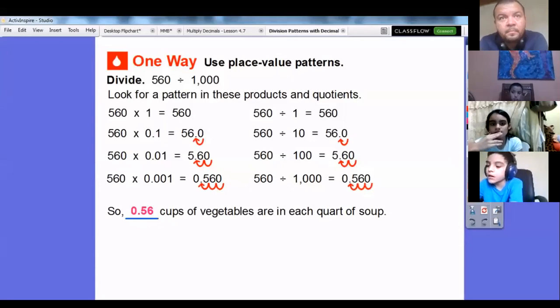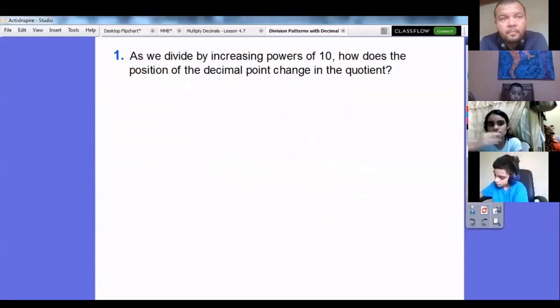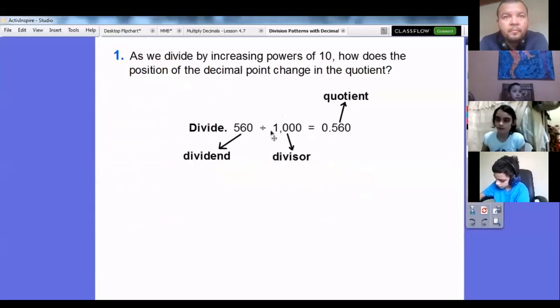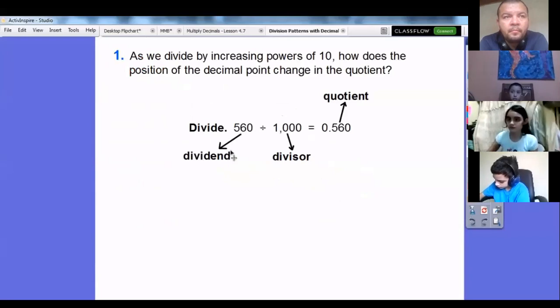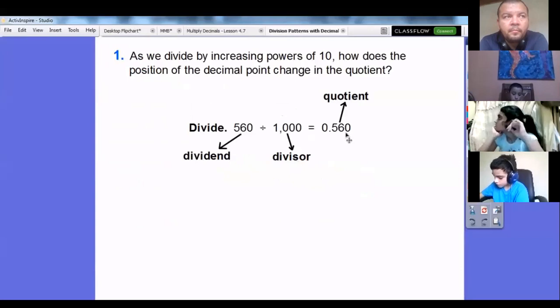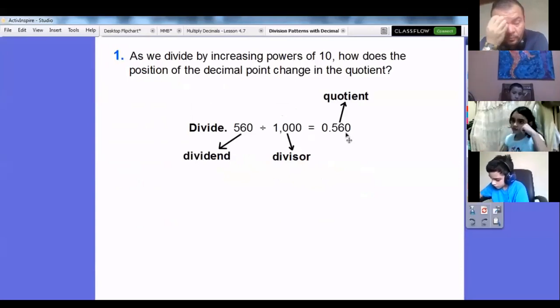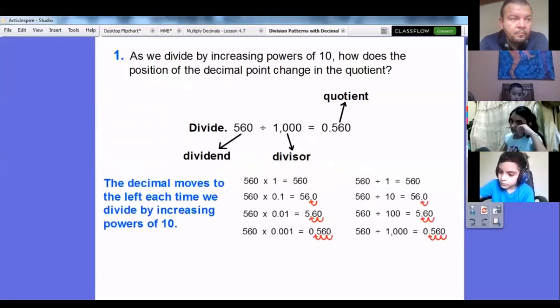As we divide by increasing powers of 10, how does the position of the decimal point change the quotient? This is our dividend, and this is our divisor. Our answer was our quotient. So the decimal moves to the left each time we divide by increasing powers of 10, just like in that last example.